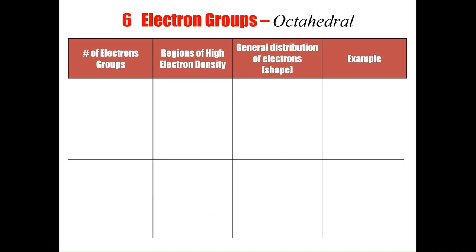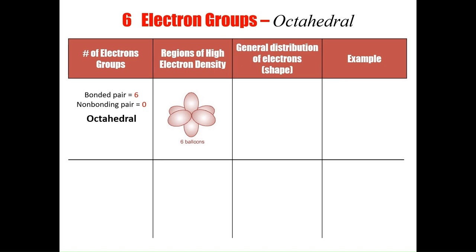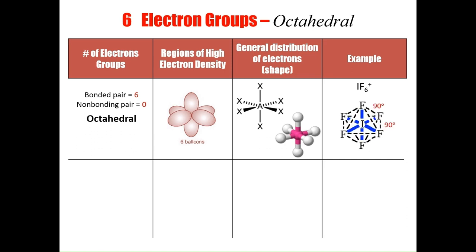The final geometrical arrangement consists of six electron groups and takes the name octahedral. Although there are five possible molecular shapes, I'll cover the main three. The first has all six electron groups bonded to atoms — the name is octahedral because the electron groups arrange into a structure with eight sides. An example is the hexafluoroiodine ion, with exactly 90 degrees between all bonding groups.